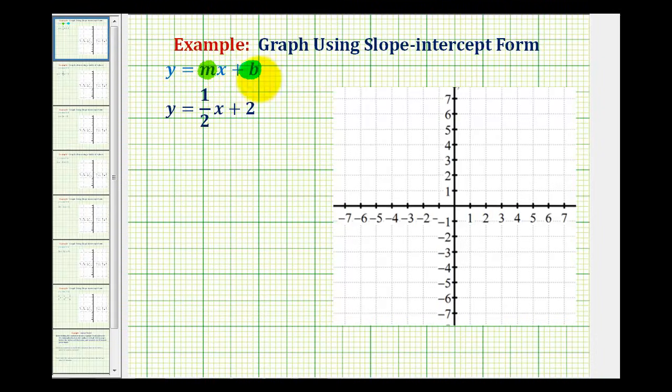So for example, if we have the equation y equals one half x plus two, b is equal to positive two, which means the y intercept would be the point zero two.